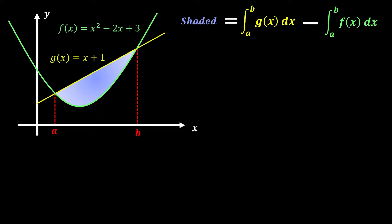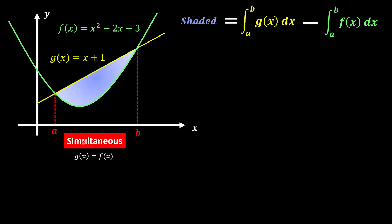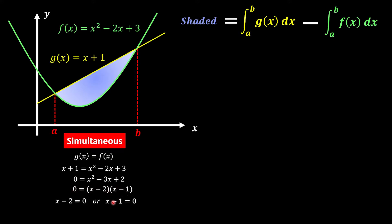Let's say we have a curve that is a function of x squared minus 2x plus 3, and a line of x plus 1. First we're going to find the intersecting point by using simultaneous — we say that f(x) and g(x) have the same coordinates at points a and b. We substitute the equations and move everything to the right-hand side, giving us a quadratic equation. Solving it, we find x minus 2 equals 0 or x minus 1 equals 0, so 1 and 2 are the intersecting points.